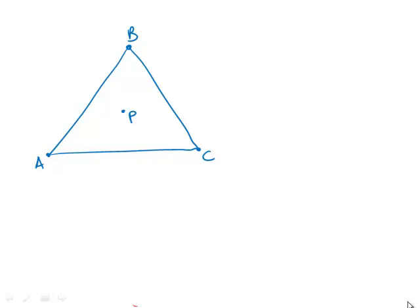In the figure, triangle ABC is equilateral and point P is equidistant from the vertices A, B, and C. If triangle ABC is rotated clockwise about point P, what is the minimum number of degrees the triangle must be rotated so that point B will be in the position where point A is now?